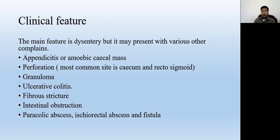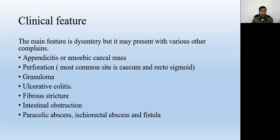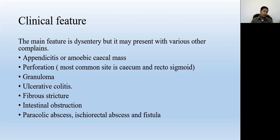Ulcerative colitis may present similarly to amoebiasis. Sometimes patients with ulcerative colitis have a super-added infection of Entamoeba histolytica. So if you have suspected a patient of ulcerative colitis, don't forget to do a stool examination, because sometimes ulcerative colitis may also have amoebiasis. You will find cysts of Entamoeba histolytica in the stool. If you are treating a patient of ulcerative colitis, don't forget to do stool examination.